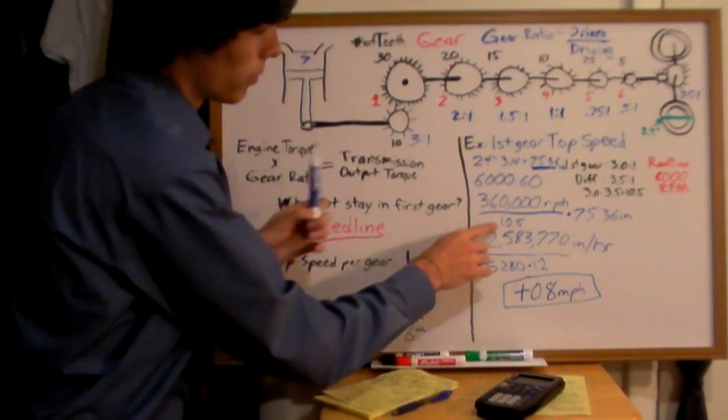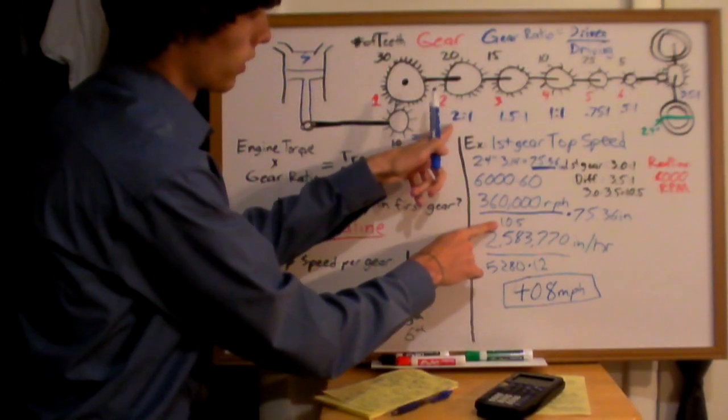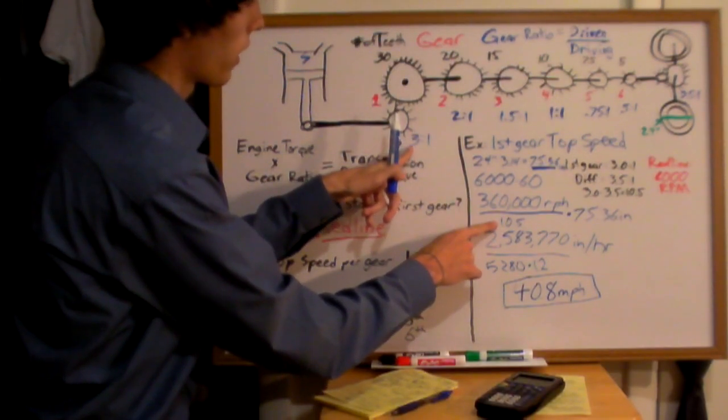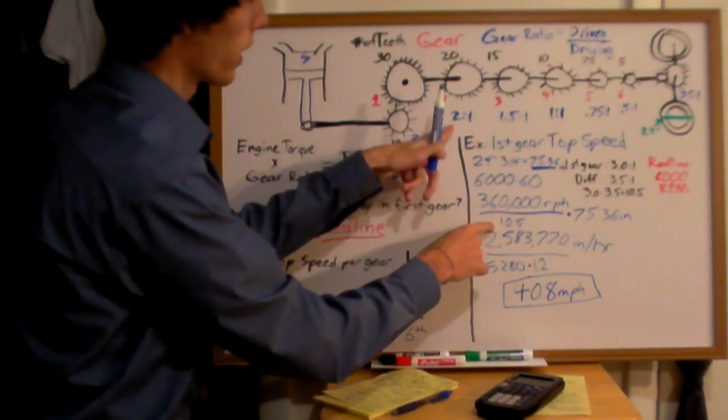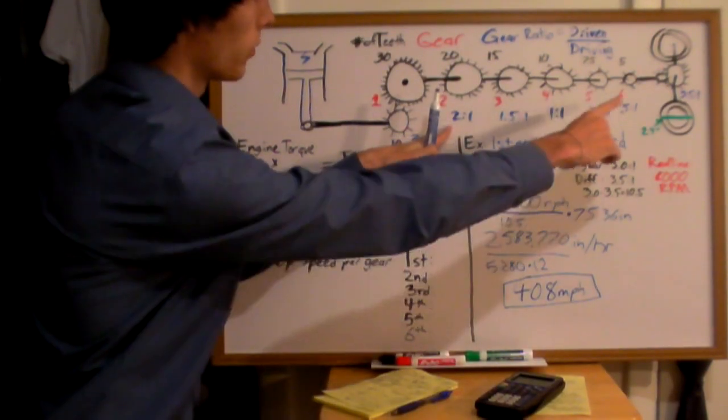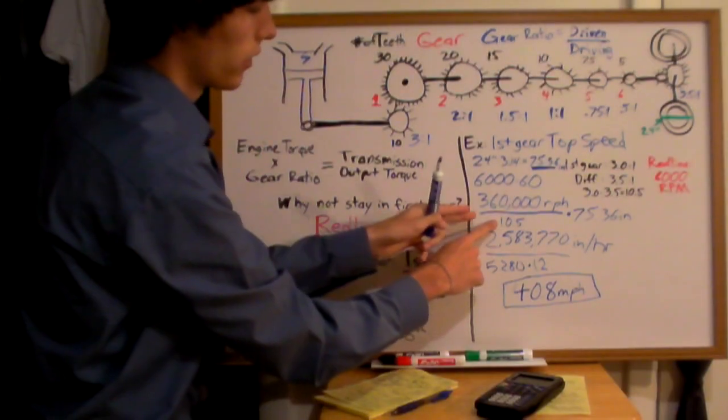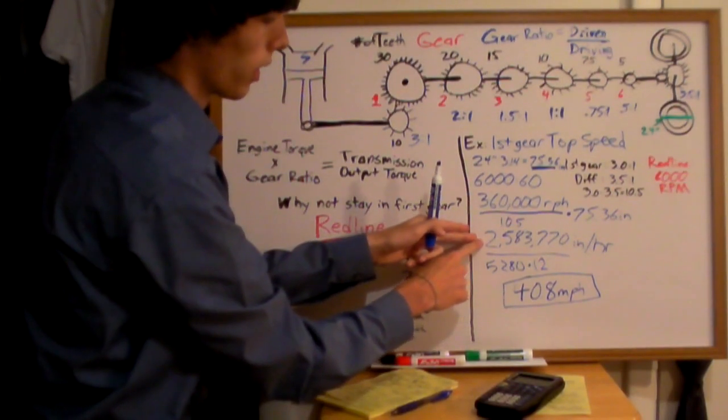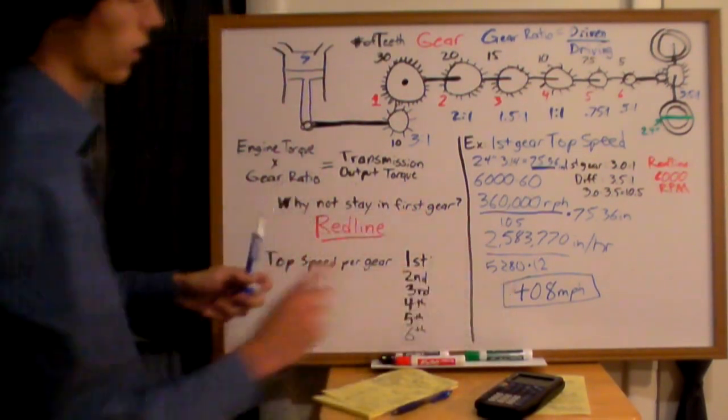By reducing this number right here, for instance, we've got for here we've got a 3 to 1 times 3.5. Well if we had a 2 to 1, 2 times 3.5, this would be replaced with a 7. This will make this a greater number, making this speed right here a greater number.